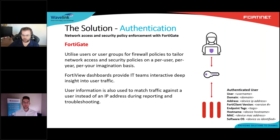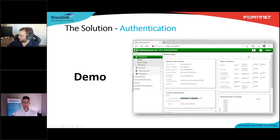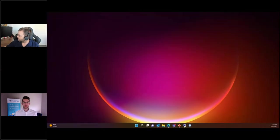The FortiGate is the firewall used on the perimeter but also on the internal network. It receives all user information from the authenticator and endpoint information from FortiClient, providing dashboards to see what users and clients are doing, what vulnerabilities clients have, and policies can be applied based on that. We can use tags to show whether a device is compromised and deny it network access. The user information is matched to traffic so IP addresses become largely irrelevant - we're matching to the user and the device. I'll bring up a quick demo of this with FortiClient and FortiGate.